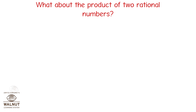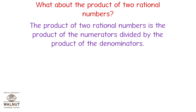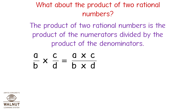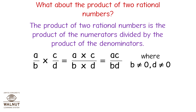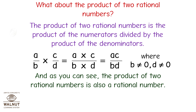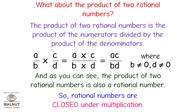What about the product of two rational numbers? The product of two rational numbers is the product of the numerators divided by the product of the denominators: A upon B multiplied by C upon D equals AC upon BD, where B is not equal to 0 and D is not equal to 0. The product of two rational numbers is also a rational number, so rational numbers are closed under multiplication.